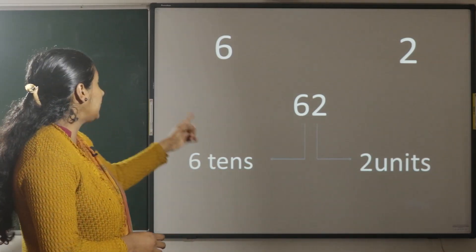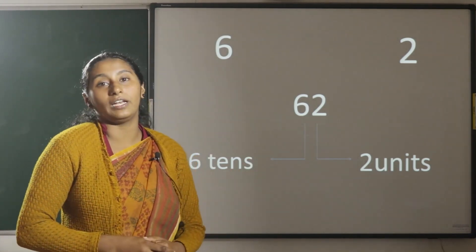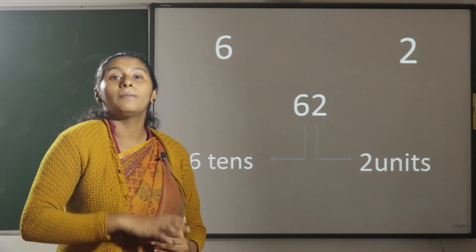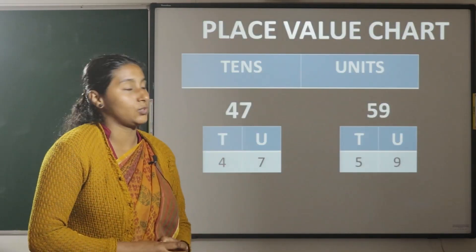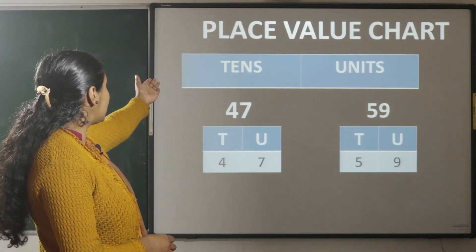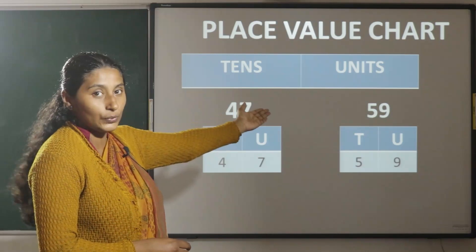Here, 6 tens and 2 units. The place value chart will help us to find the place value of the number. Let us see the place value chart. Now, this is the place value chart, tens and units.